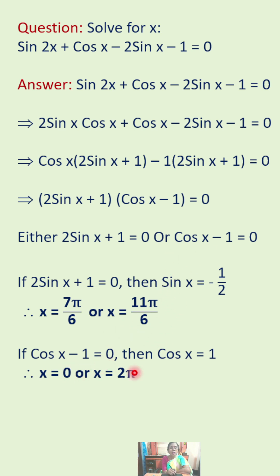If cos x minus 1 equals 0, then cos x equals 1, which gives us x values as 0 or 2π.